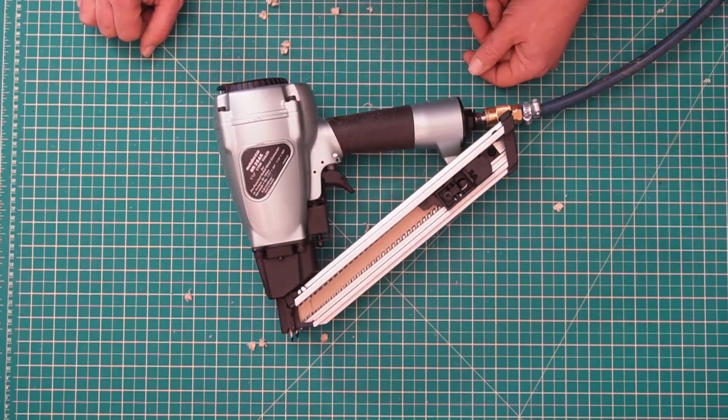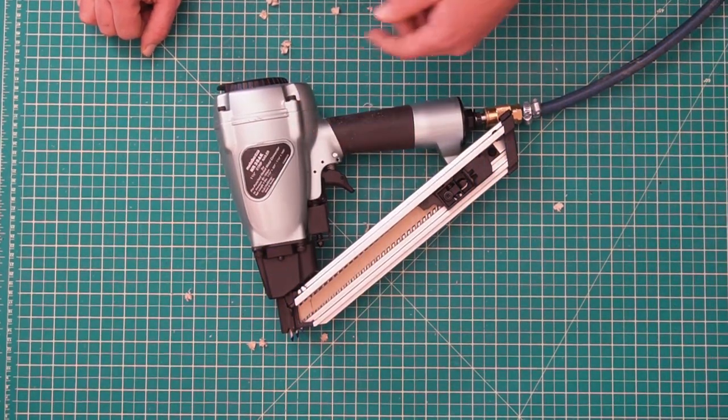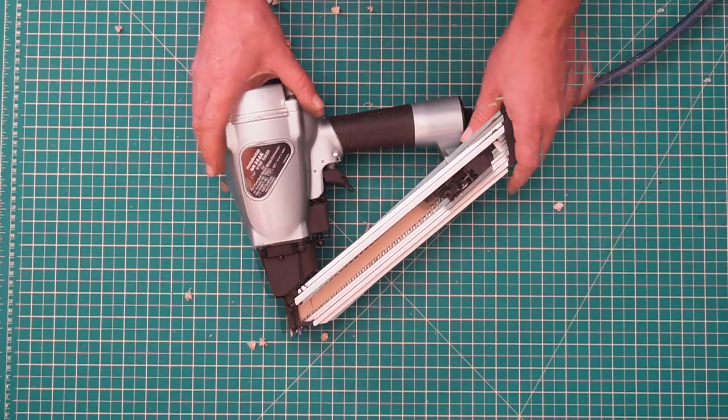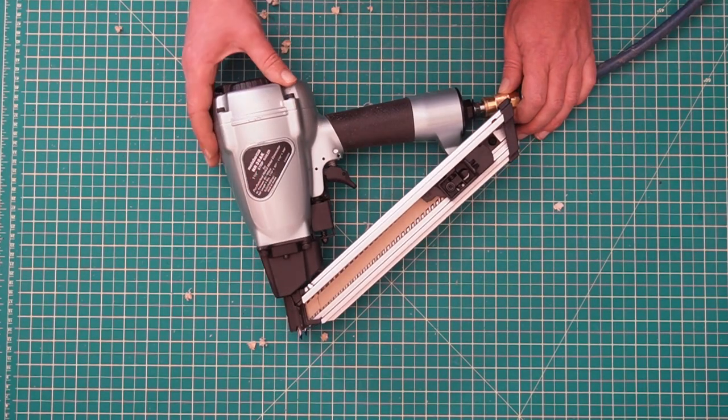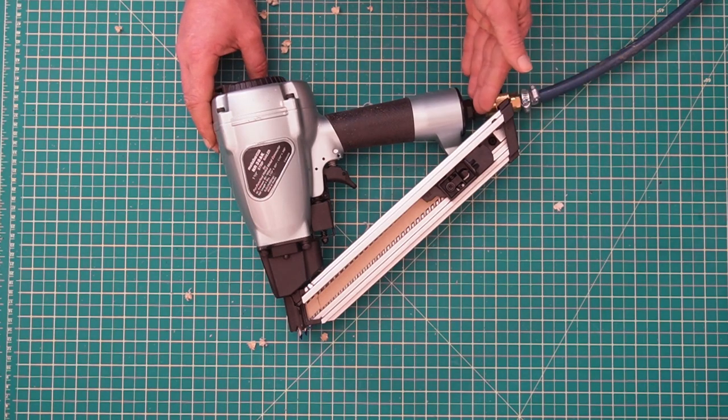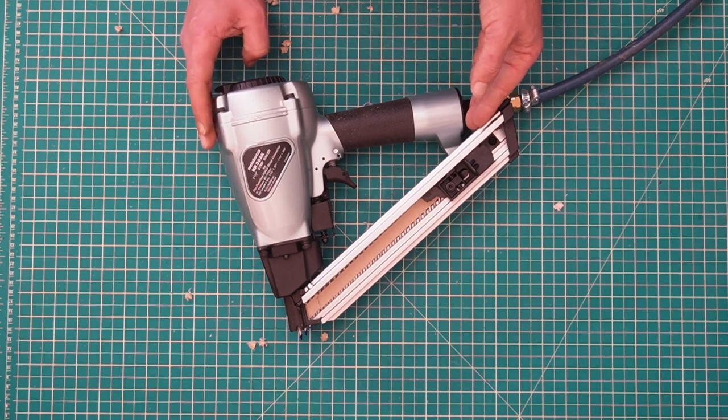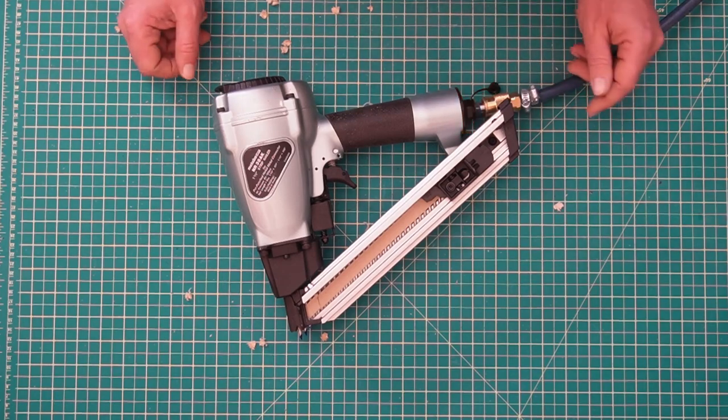Personally I would pick the Bostitch one but got a deal on this one so that's why I have this one. Didn't come with a hard case. I'm pretty sure the Bostitch one comes with the hard case and comes with the rafter hook at the same price so technically this gun's more expensive.